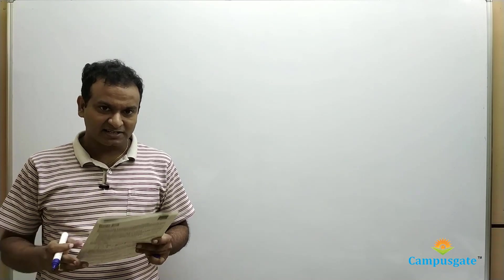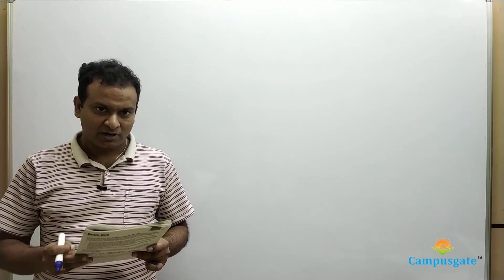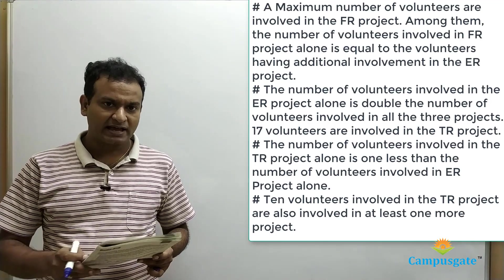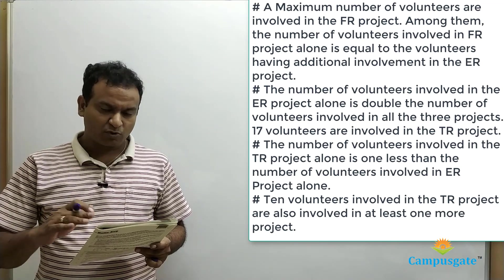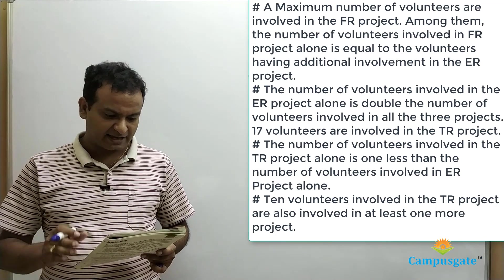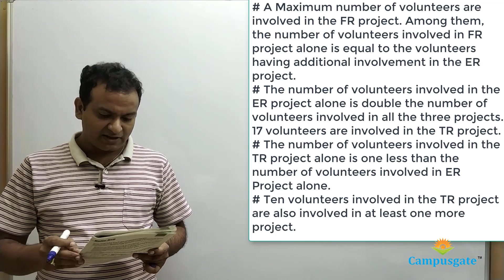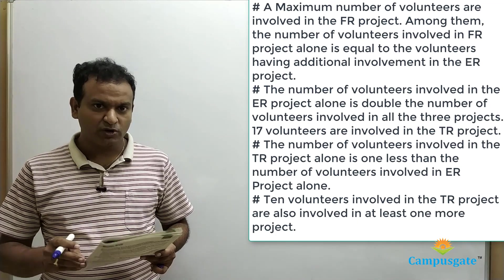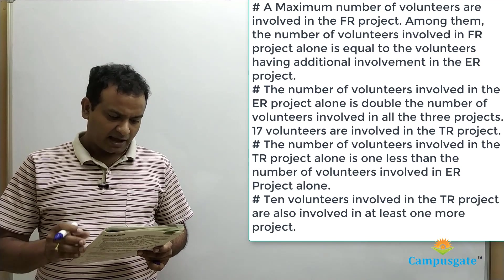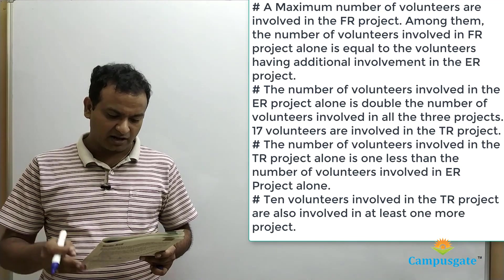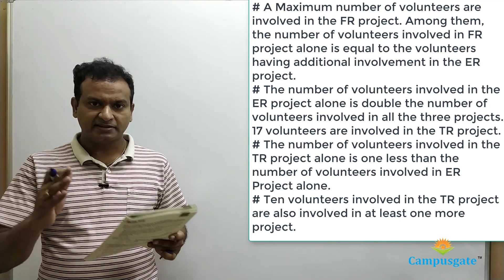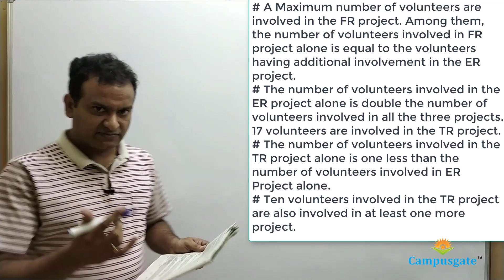This is a very interesting set-based question from CAD 2005. There is an NGO called Help Distress (HD) providing assistance to people suffering in various natural disasters like tsunamis. It is given that there are 37 volunteers total who are involved in 3 different projects: Tsunami Relief (TR), Flood Relief (FR), and Earthquake Relief (ER). Based on the clues given, we need to find the set. Let us first draw the Venn diagram.